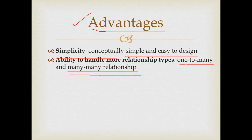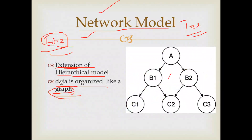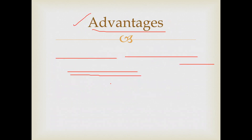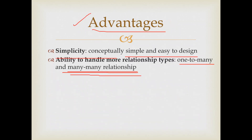For example, B1 can have children C1 and C2 — this is a one-to-many relationship. At the same time, C2 can have parents B1 and B2 — this is also a one-to-many relationship from the other side. So in the network model, it supports both many-to-many and one-to-many relationships, giving it the ability to handle more relationship types.